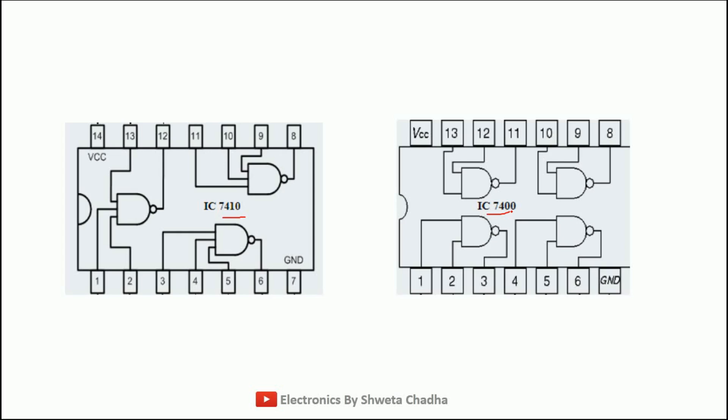Let us talk about IC 7410 first. In 7410, we have a total of 3 gates — 3-input gates. Gate number 1: pin number 1, 2 and 13 are inputs, pin 12 is output. Next, pin number 3, 4 and 5 are inputs, pin 6 is output. And the last gate: pins 9, 10, 11 are inputs and pin 8 is output. Hence, with the help of a single IC 7410, we can implement a total of 3 three-input NAND gates.